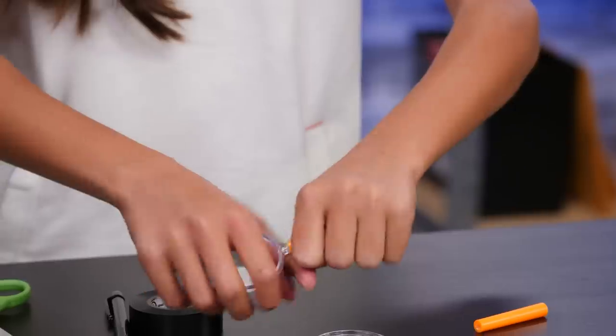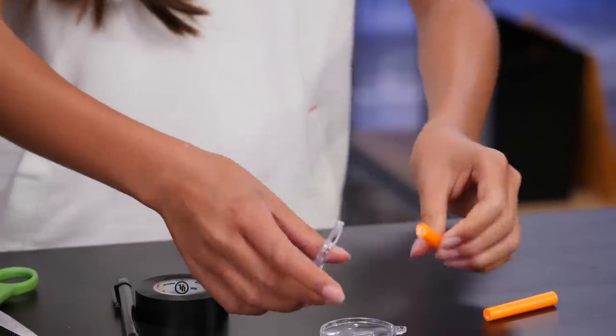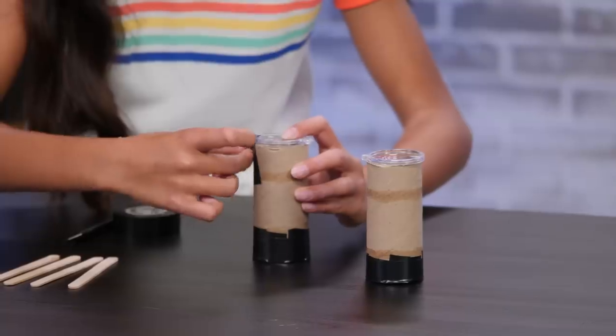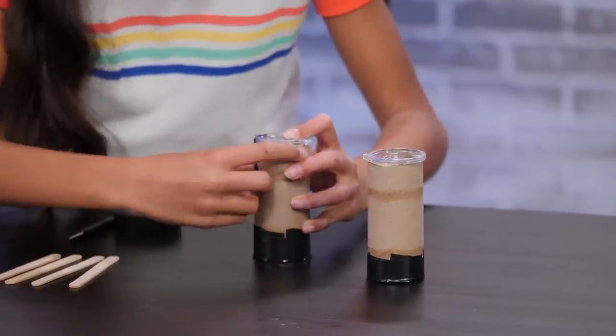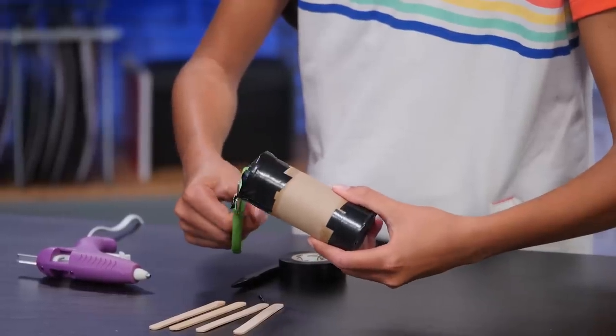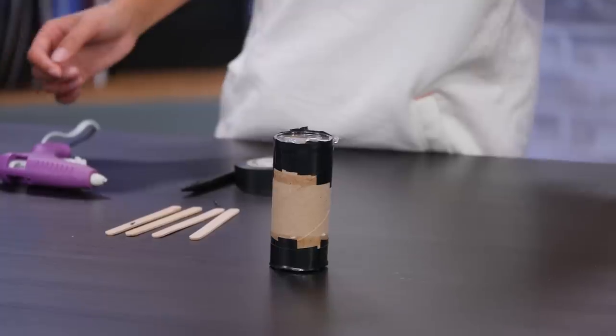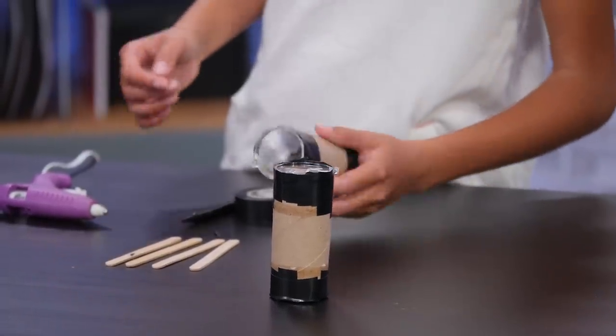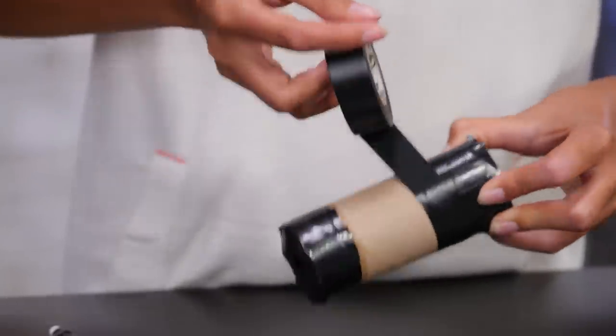Snap the sticks off of two magnifying glasses. Tape your magnifying glass to the other end of your toilet paper roll. Trim the edges of the tape. And do the same for your other toilet paper roll. Cover the rest of your tubes in tape.